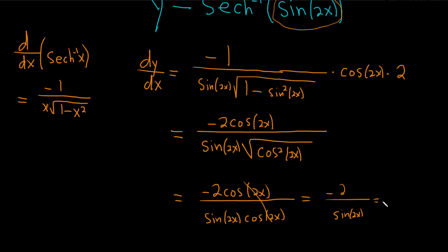And then the reciprocal of sine is cosecant, so this is negative 2 cosecant 2x. Really, really beautiful solution. I hope this video has been helpful to someone out there in the world. Good luck.